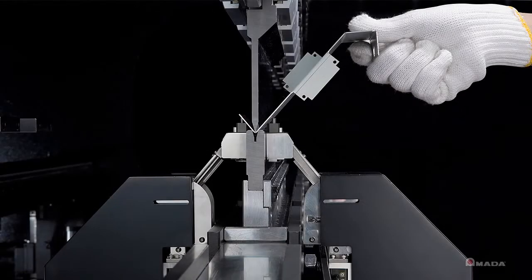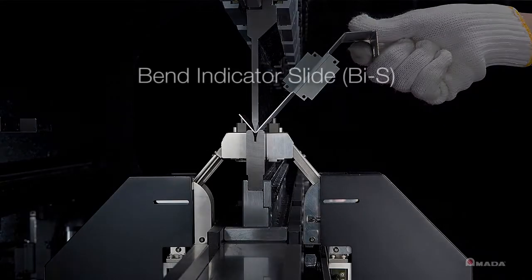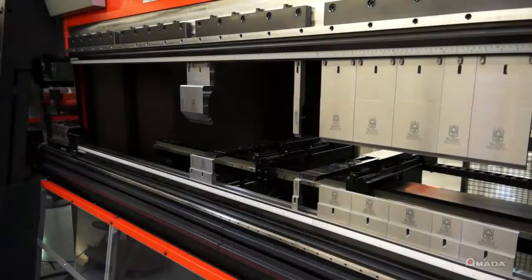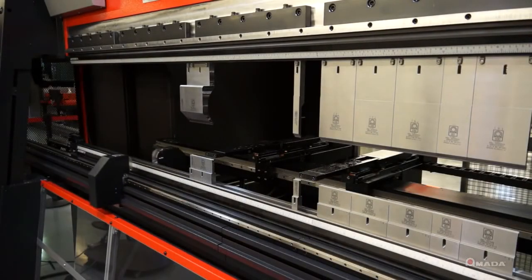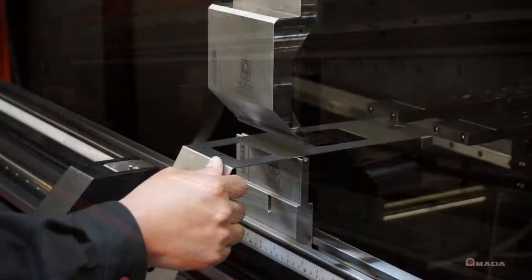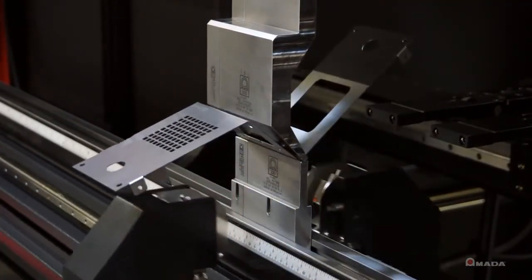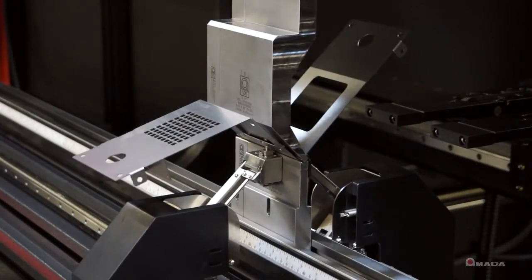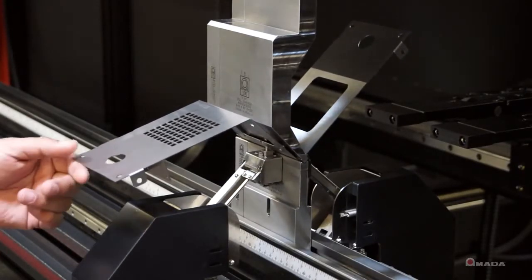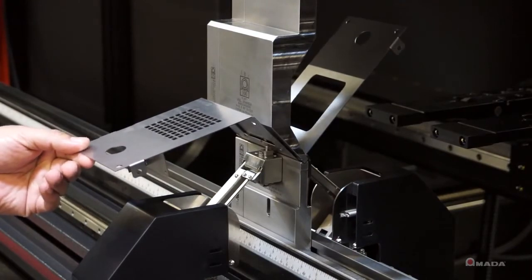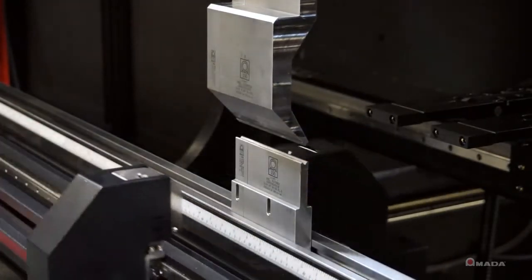To ensure consistent accuracy with each bend, the HDATC is equipped with the BI slide. With BIS, you get the correct angle with every bend. When the RAM comes down and pinches the material, sensors will pop up, lightly touch the material, and begin adjusting the angle. Adjustments are automatically made to ensure high-quality bending and compensate for varying material thicknesses and grain direction.